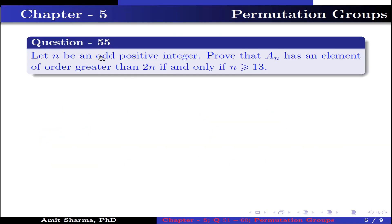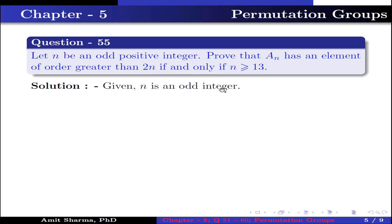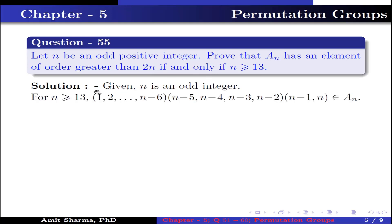Question number 55. Let n be an odd positive integer; prove that An has an element of order greater than 2n if and only if n is greater than or equal to 13. Given n is an odd integer. For n ≥ 13, the product of permutation (1 2 ... n−6)(n−5, n−4, n−3, n−2)(n−1, n) belongs to An.